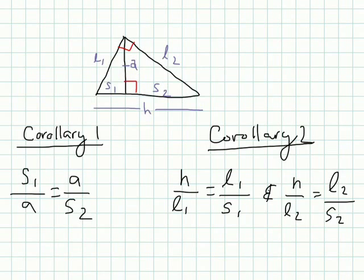And so corollary one, just kind of overviewing it, just basically says that the altitude of a right triangle is the geometric mean of segment one and segment two.